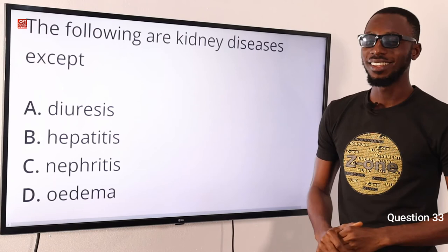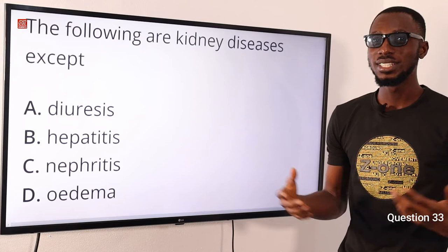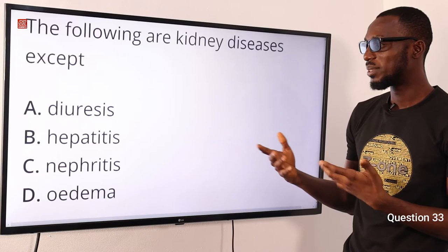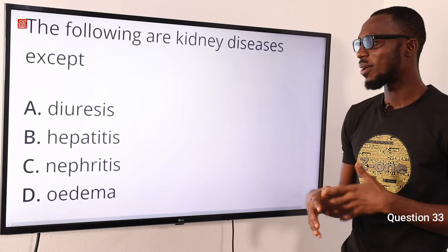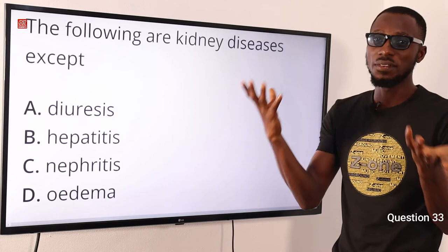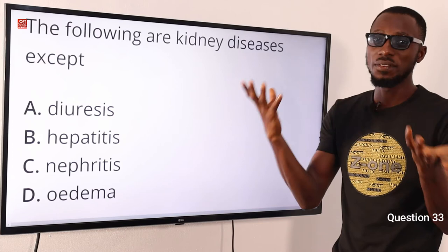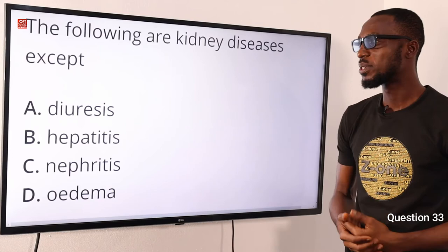Question 33: The following are kidney diseases except what? Hepatitis — caused by virus type A or type B — is a liver disease, not a kidney disease. Diuresis is when you produce large quantities of dilute urine. Glomerulonephritis is a streptococcal infection common in adolescents and children. Oedema (dropsy) is accumulation of large quantities of intercellular fluid causing swelling, puffy faces, and swollen ankles. Diuresis, glomerulonephritis, and oedema are kidney diseases; hepatitis is for the liver. So option B is the correct option.